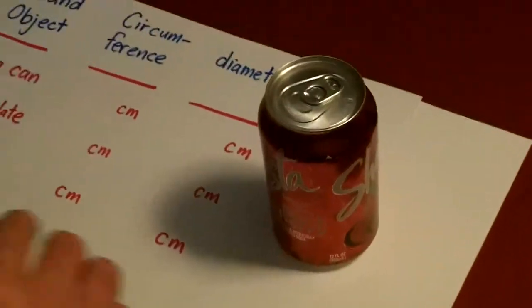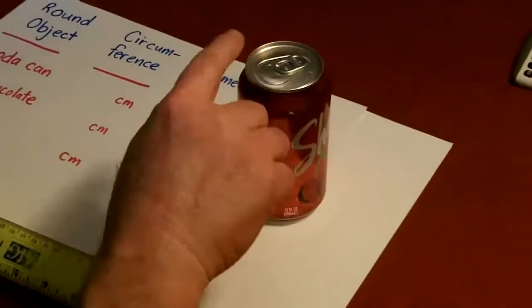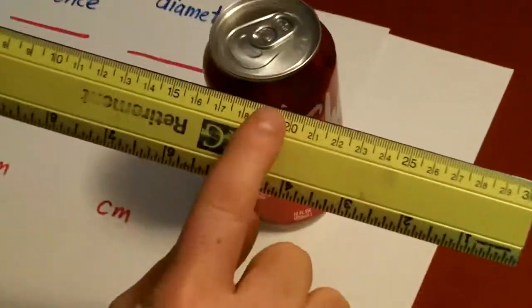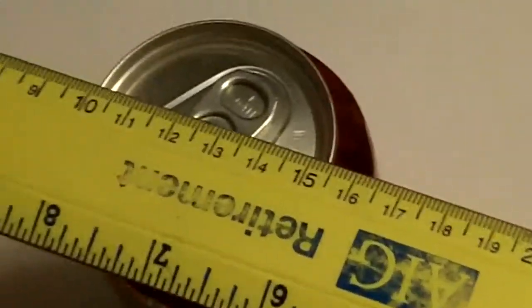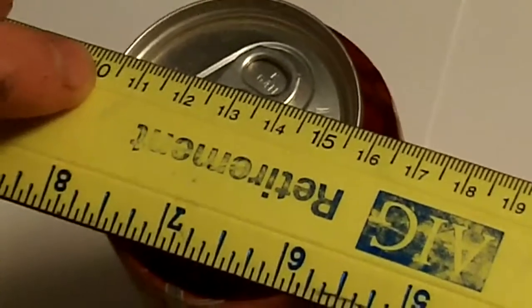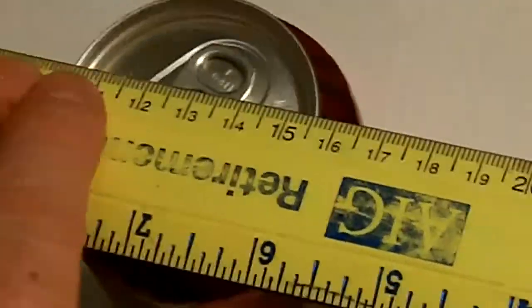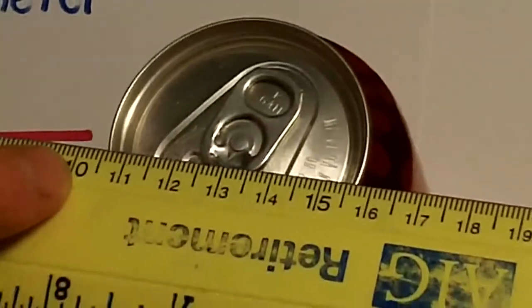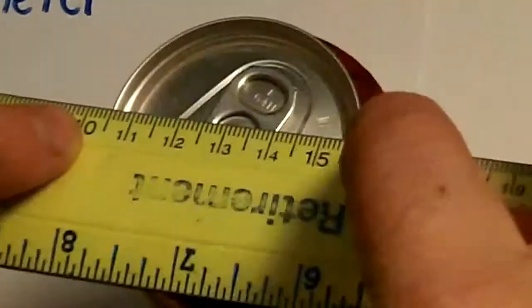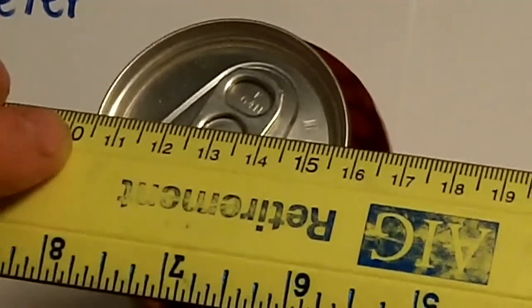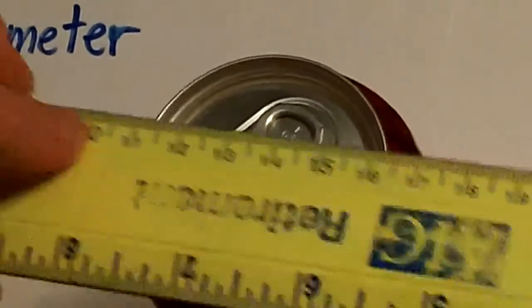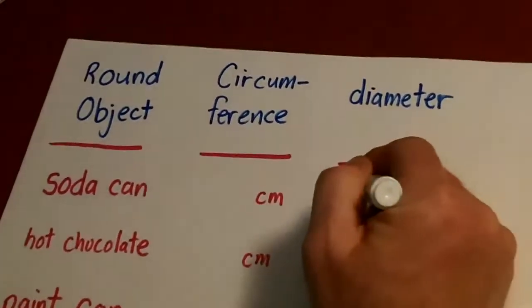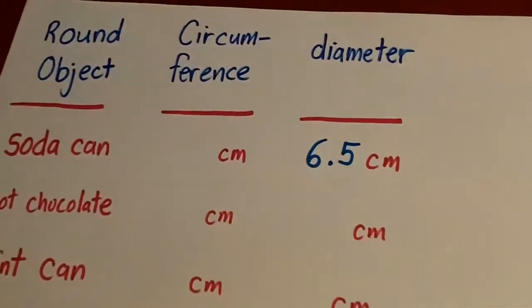Let's take the soda can here. We're going to measure the diameter in centimeters. So here's the centimeter part of the ruler. What I like to do is I like to put 10 on the left side here, and it's very easy just to count out from there. Now if we look over this diameter from the widest point here to the widest point there, it's about 6 1⁄2 centimeters. So soda can, 6 1⁄2 centimeters.